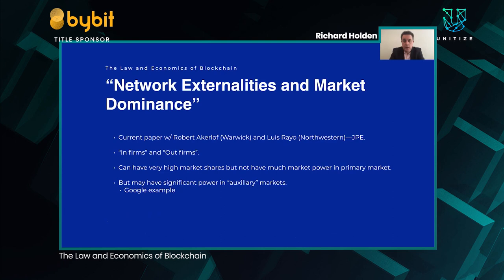This relates to a current paper of mine with Robert Akerlof at Warwick and Luis Rayo at Northwestern, under revise and resubmission at the Journal of Political Economy. What we show is that in markets with network externalities — think of platform markets like Uber, Amazon, or Facebook, where the more people are on it the more attractive it is for you to be on it — you can have a situation with in-firms and out-firms where somebody has very high market share. They may not have a great deal of market power in that market, but they may have power in auxiliary markets, and that's very relevant for thinking about these digital currencies.